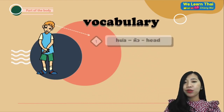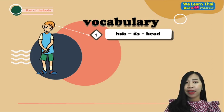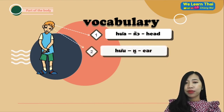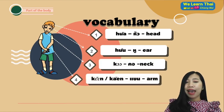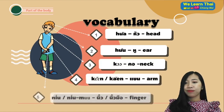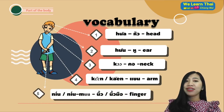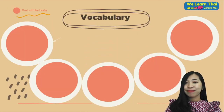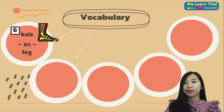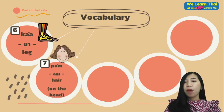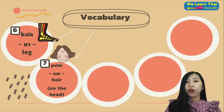The first vocabulary: หัว (head), หู (ear), คอ (neck), แขน (arm), นิ้ว (fingers) — or you can say นิ้วมือ. ขา (leg), ผม (hair), ใบหน้า (forehead).